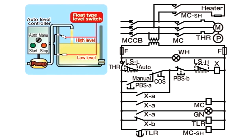Next, let's see how pump operation is resumed. First, the changeover switch is set to manual mode. When P-B-S-A is pressed, current passes through P-B-S-A to C-O-S to P-B-S-B, L-S-H, and to X, and X is excited. In the subsequent sequence operation, X-A turns on, allowing current to flow from X-A to P-B-S-B, L-S-H, and to X. As a result, X remains excited and pump operation continues, even if you take your finger off P-B-S-A.